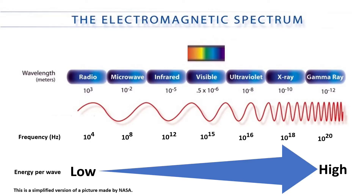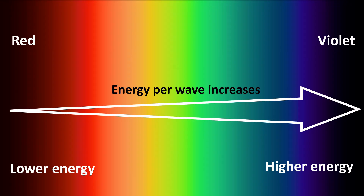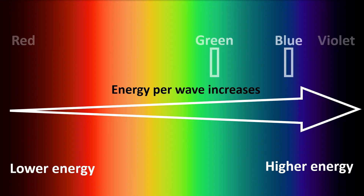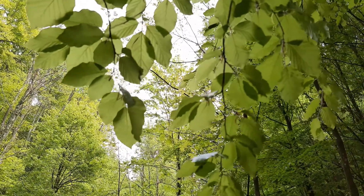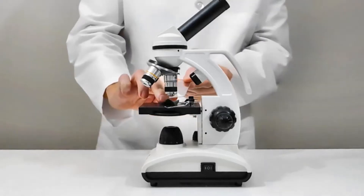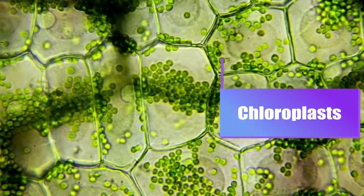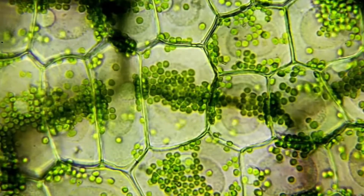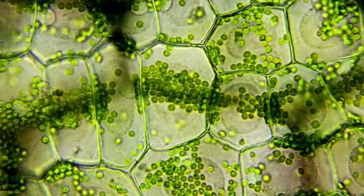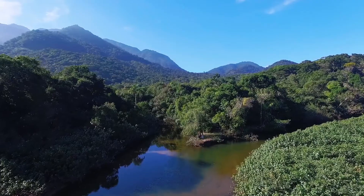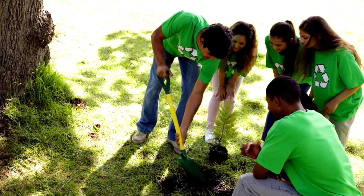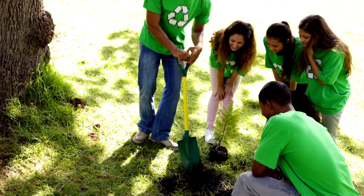This trend of energy increasing with frequency also applies to colors of light. Since violet light is on the right of the spectrum diagram, it has more energy than red light, and every wave of blue light has more energy than every wave of green light. This difference may explain some plant biology: looking at a leaf under a microscope, we can see green spheres called chloroplasts containing chlorophyll, which captures light energy to drive photosynthesis. Chlorophyll is excellent at absorbing blue light but reflects green light — which is why almost all healthy plants are green. We see the green light they reflect, not the higher-energy blue light they absorb.